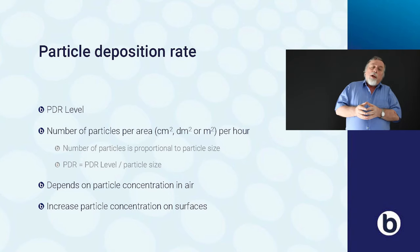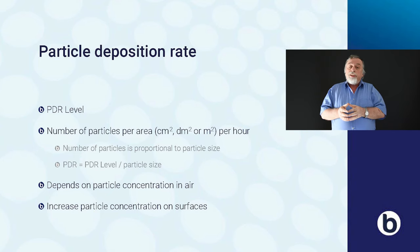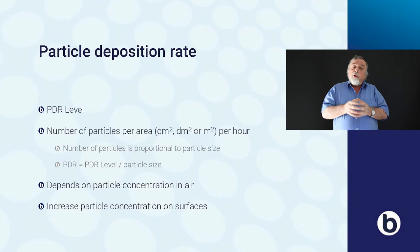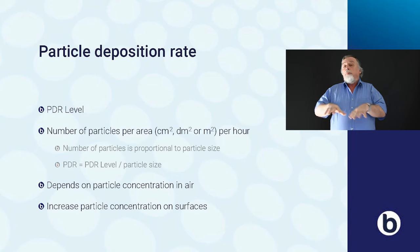Particle deposition depends on the particle concentration in air. Particle deposition will also cause an increase of particles on surfaces and thereby impact surface cleanliness. Particle deposition rate is the product of particle concentration in air times the deposition velocity. Particle deposition rate is also equal to the change of surface cleanliness divided by time.